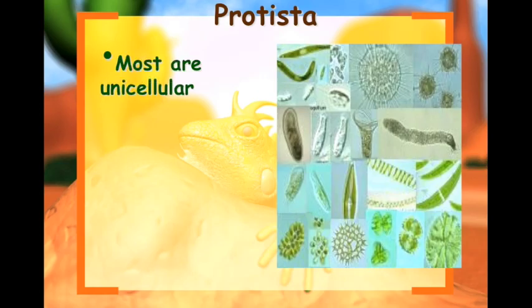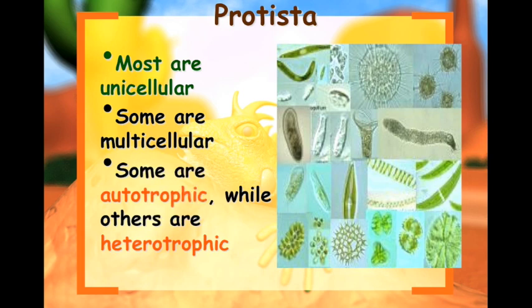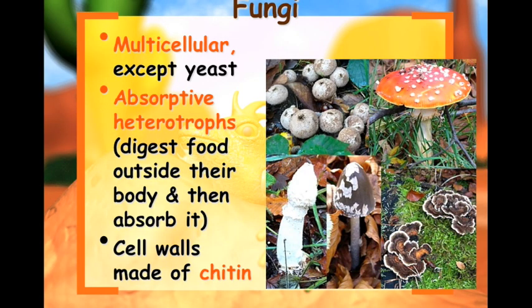Protista: most are unicellular, some are multicellular, some are autotrophic while others are heterotrophic. You're usually going to find protista such as protozoans or algae in the water. Fungi: most of us know what mushrooms are — multicellular, except for yeast, which is a single-celled organism. Fungi are absorptive heterotrophs, which means they digest their food outside their body and then absorb it. They have cell walls made of chitin.